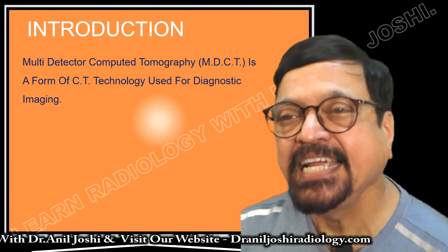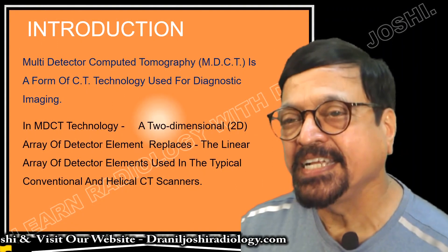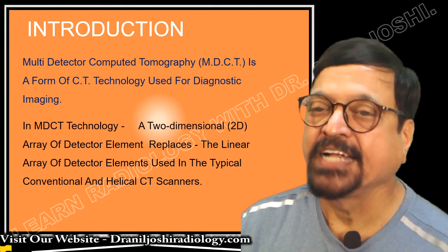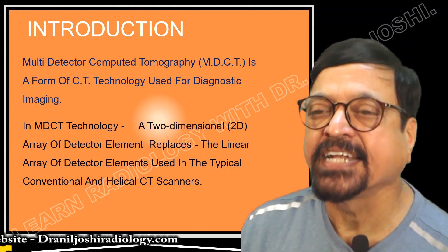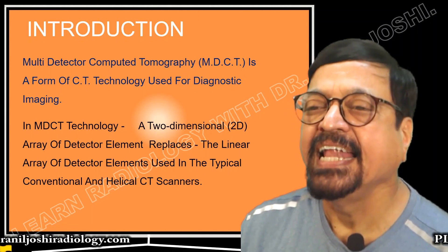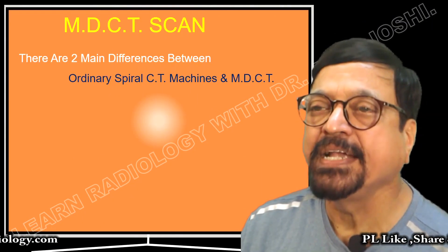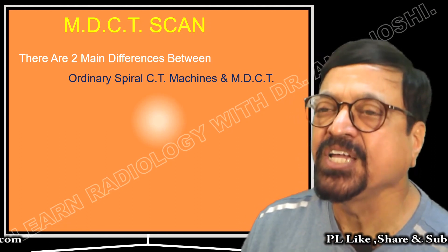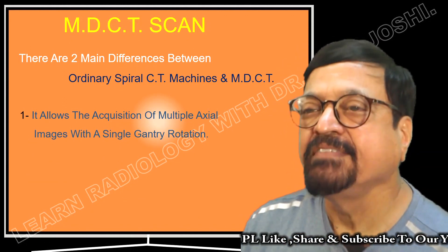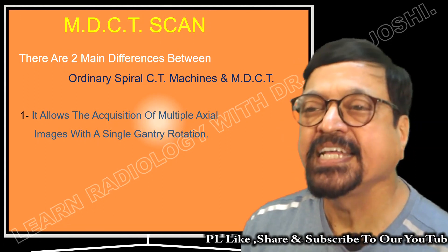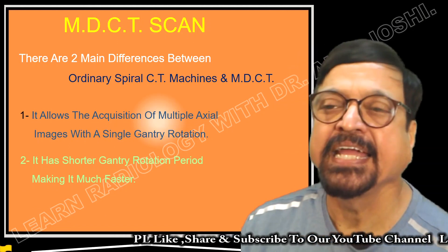Multi-detector computed tomography is a form of CT technology used in diagnostic imaging. In MDCT technology, a two-dimensional 2D array of detector elements replaces the linear array of detector elements used in typical conventional and helical CT scanners. There are two main differences between ordinary spiral CT machines and MDCT: number one, MDCT allows acquisition of multiple axial images with a single gantry rotation; and number two, it has a shorter gantry rotation period, making it much faster.